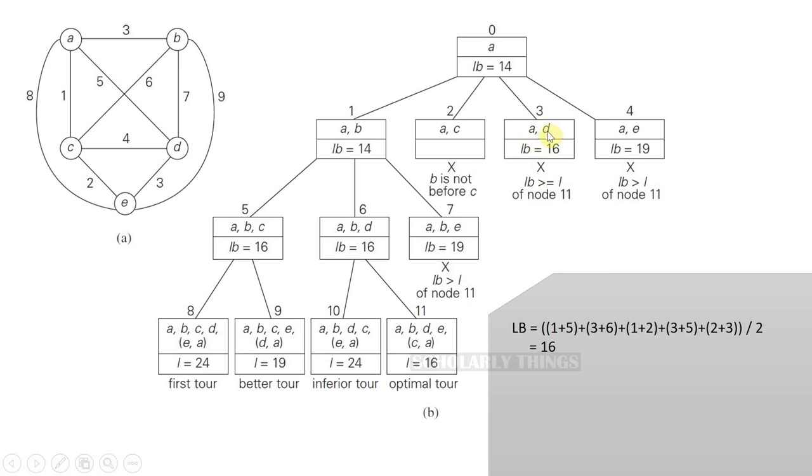At node 3 for A, D, the lower bound is 16. We saw this previously where if we have to include edge AD, the lower bound will be calculated as 16. Node 4 is suggesting we go to E from A, so the lower bound for it will be 19. Now compare all the lower bounds. Lower bound equal to 14 is the smallest one, so let's choose this and branch out.